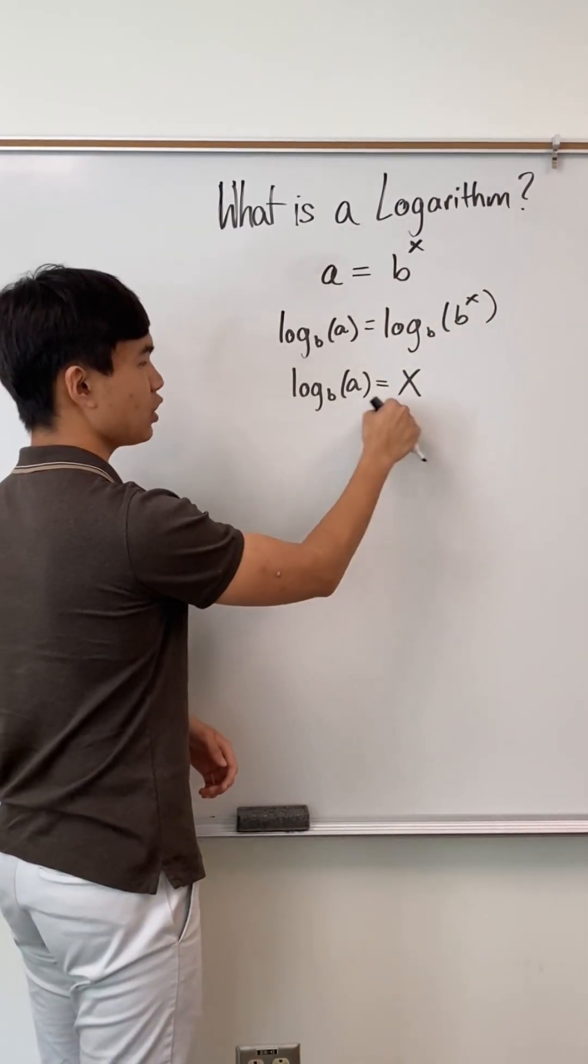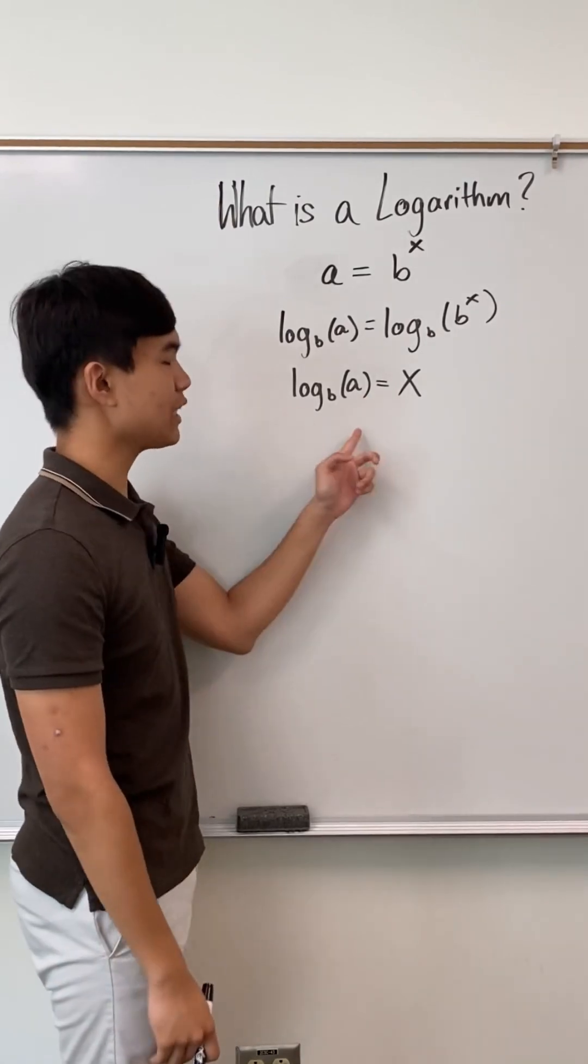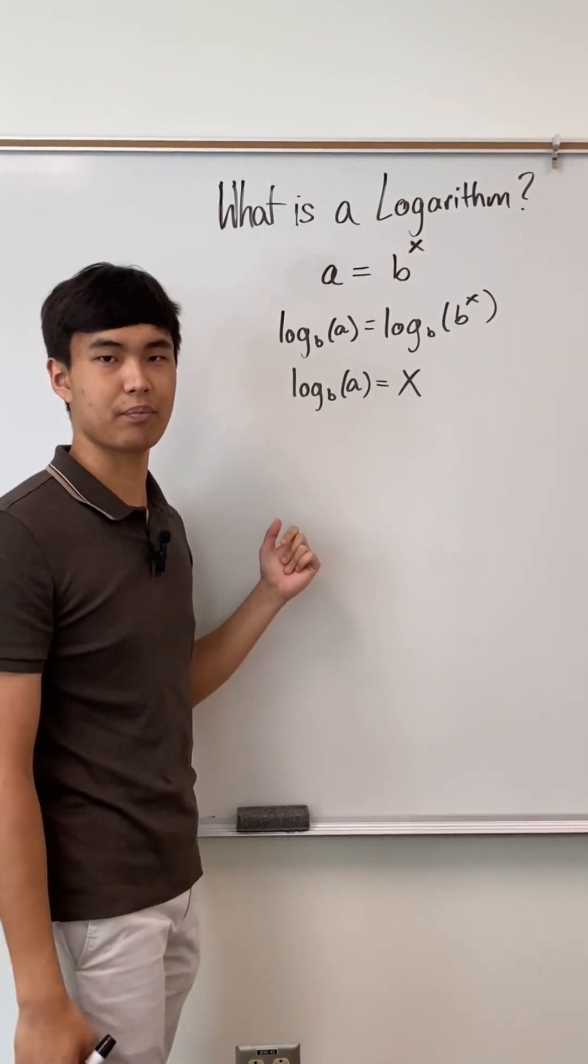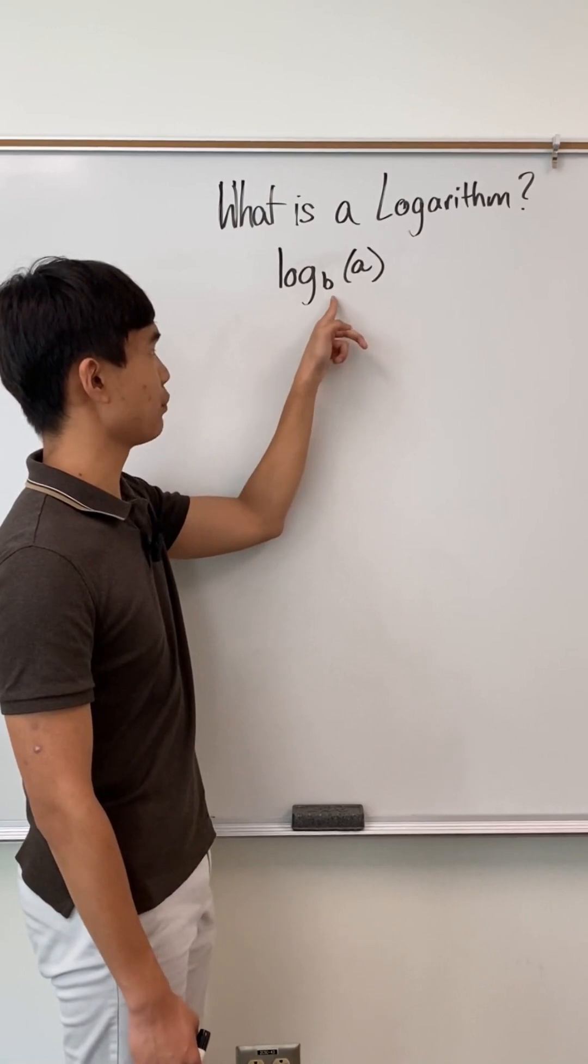This reads, b to what power equals a? And once you get to this form, this is something you can usually just put in a calculator. Generally, this is how a log is written, with b as the base and a as the argument.